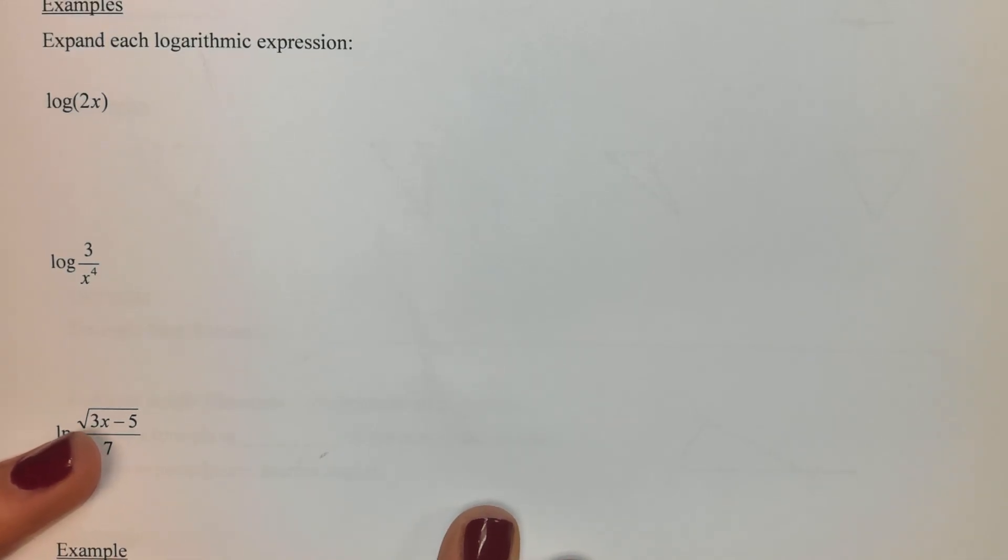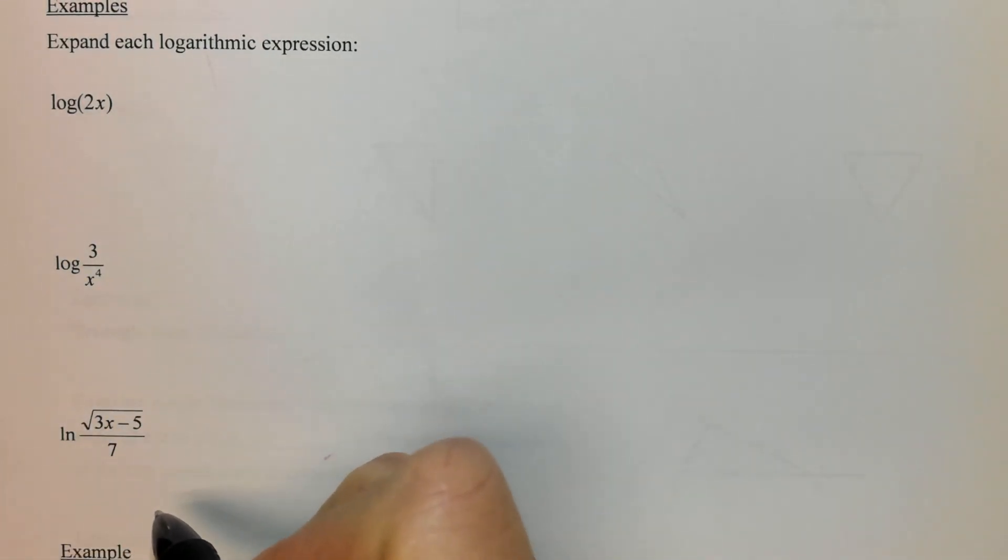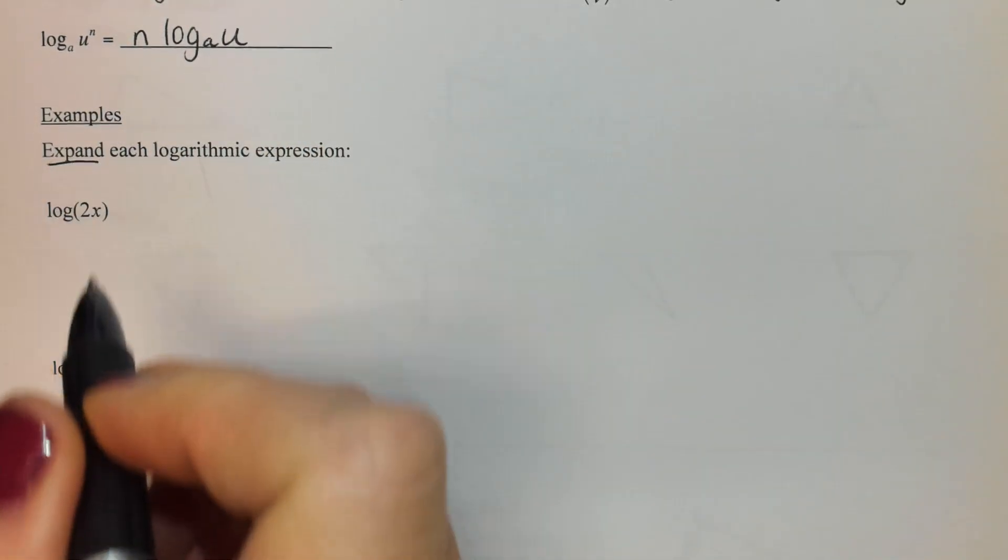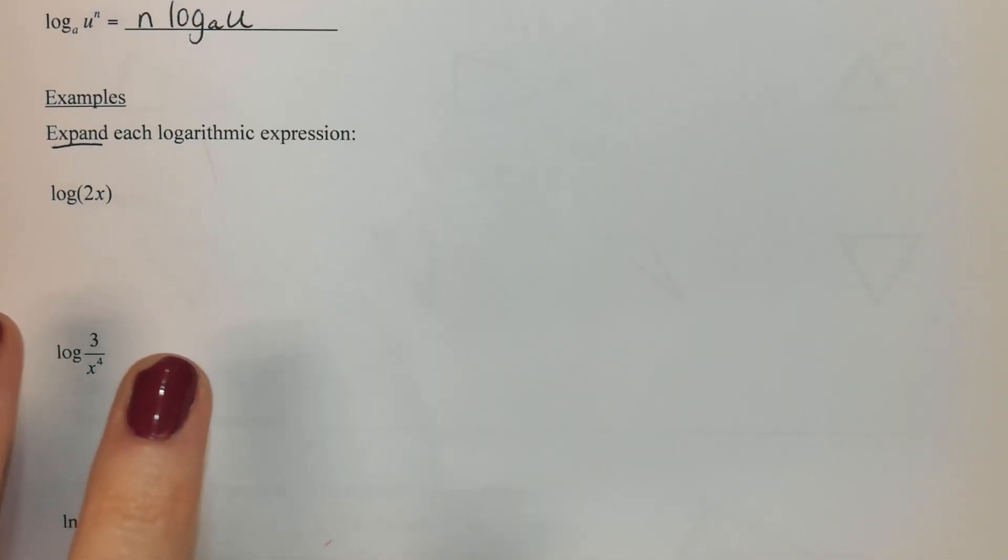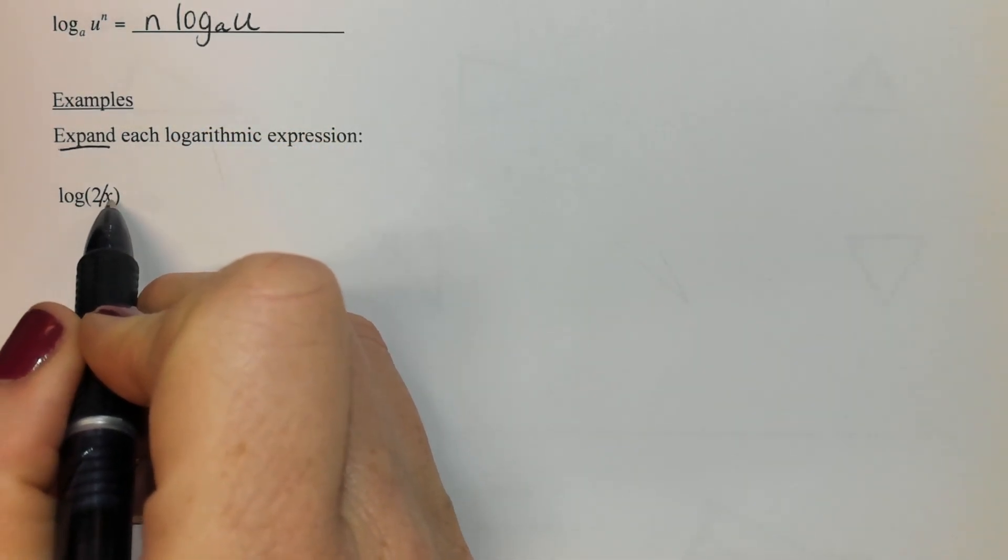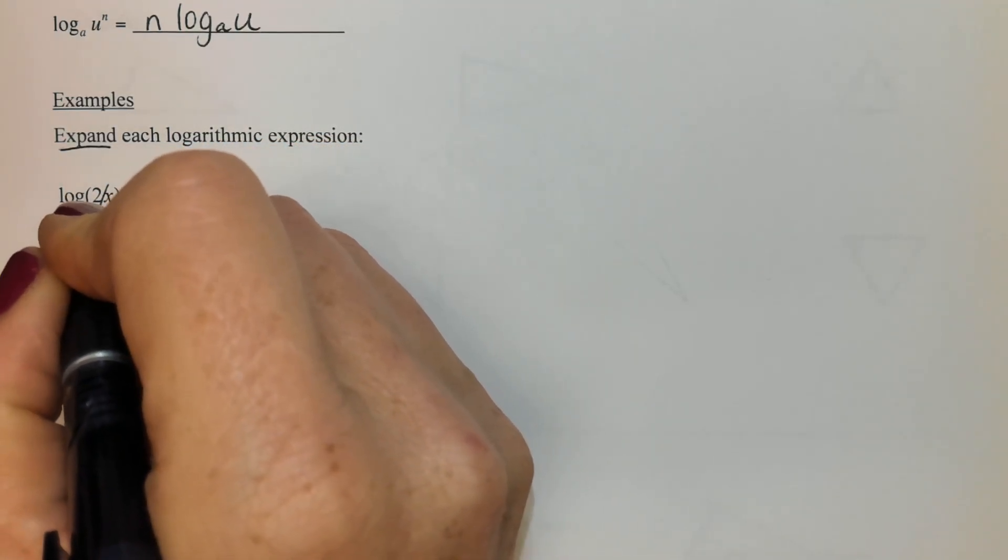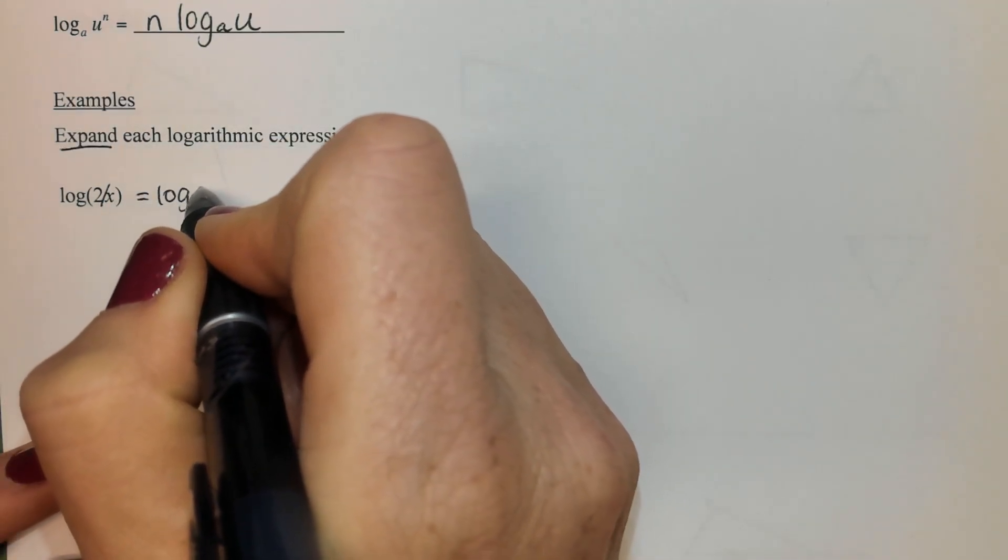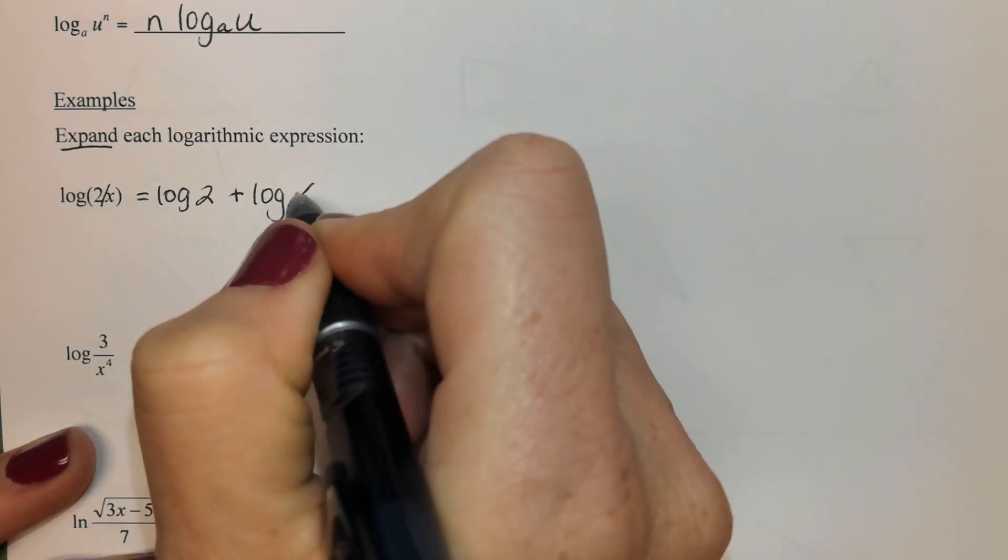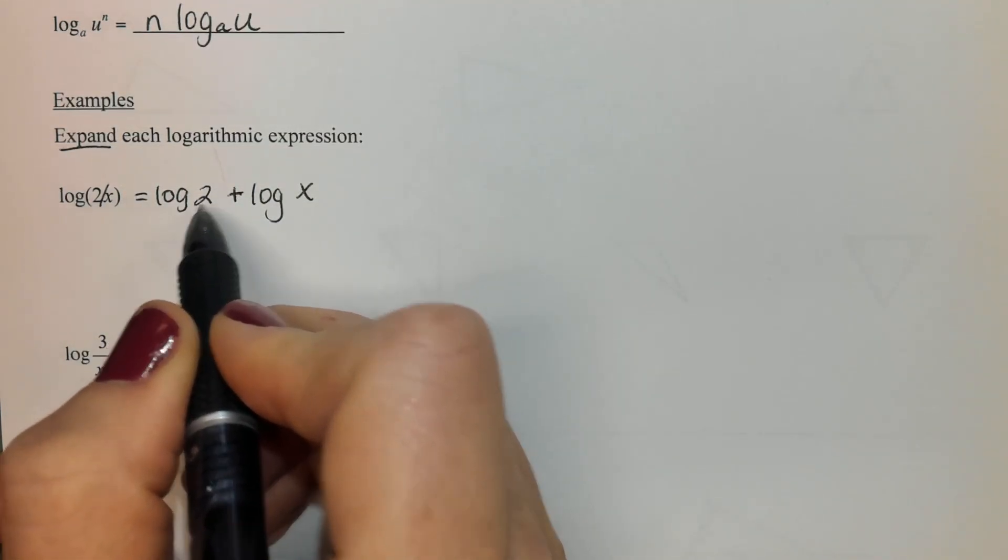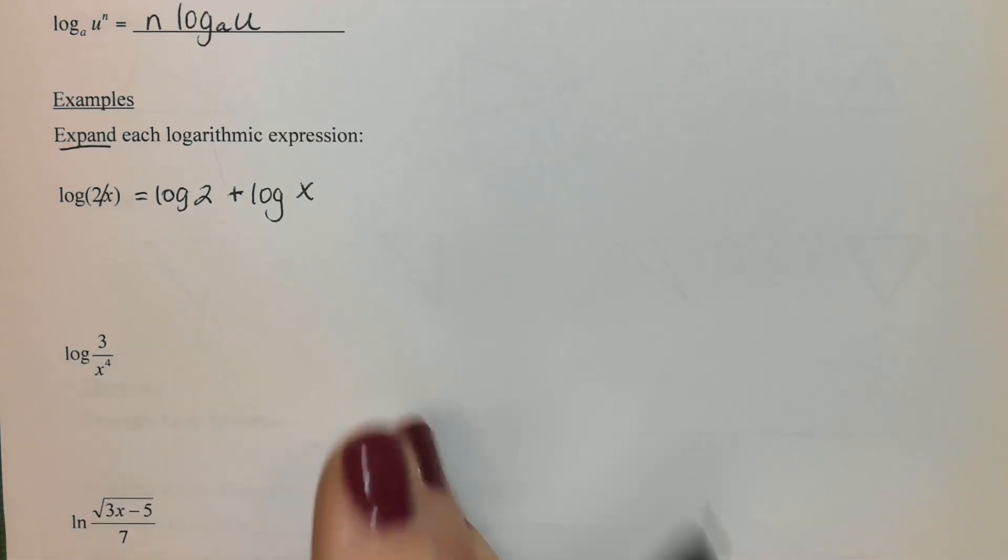So let's try a couple. This first one says let's expand. We're going to expand all three of these, and then down below we're going to condense. To expand them means I want to spread them out, separate them as much as I can. So right here we've got two things, a 3 and an x. So I can separate them. I don't have a specific base there besides base 10, so I don't need to write it. So I'll do log 3 and then log x. I just took that multiplication happening in there and split it with addition, making sure both of those things got their own separate log.